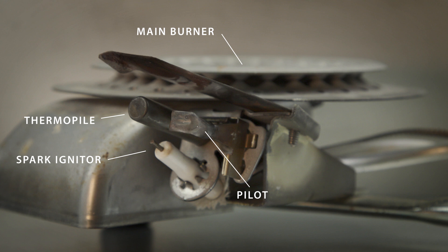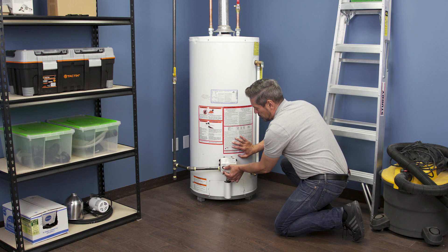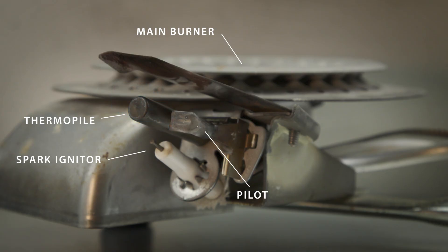Now if the thermopile is faulty, then it will also prevent the pilot from staying lit. If you try to light the pilot and it won't stay lit, then it could be a problem with the thermopile or thermal cutoff switch.